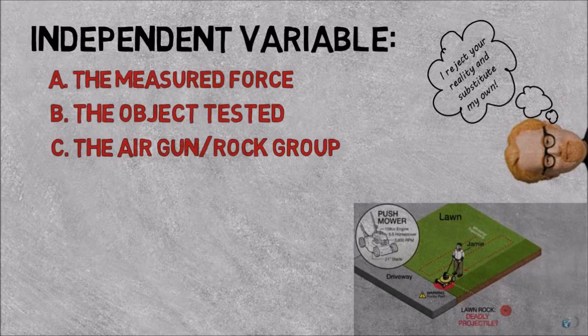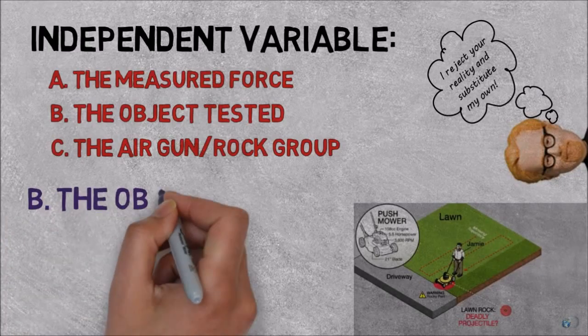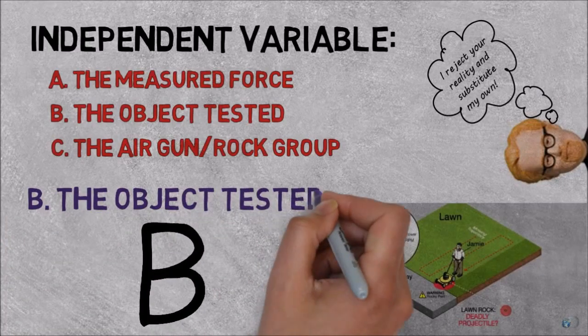The correct answer is B, because B explains the difference between the experimental and control groups.